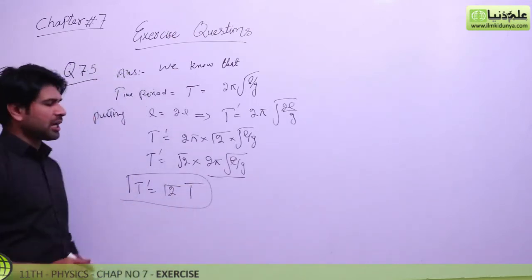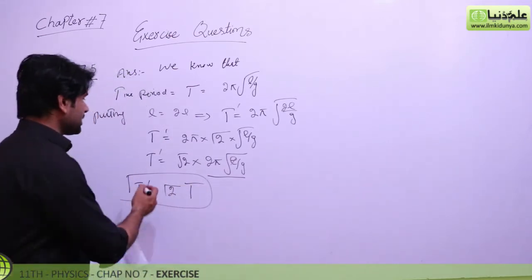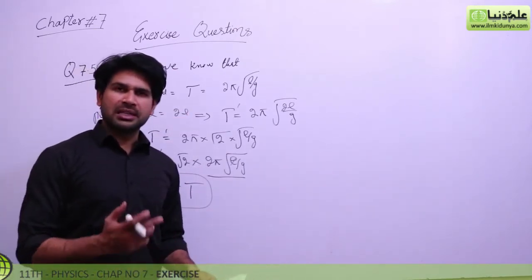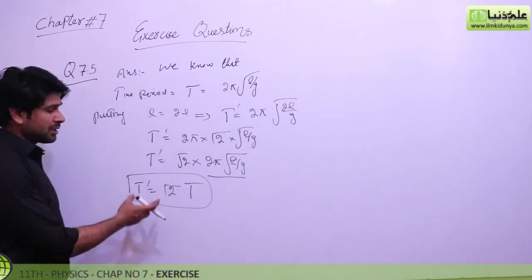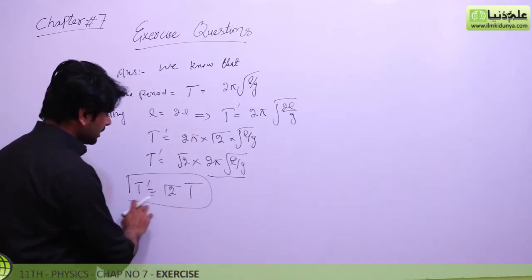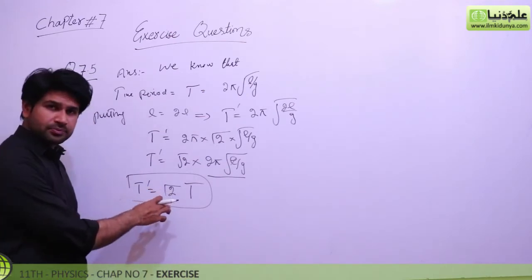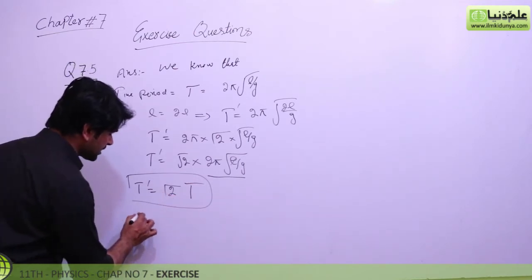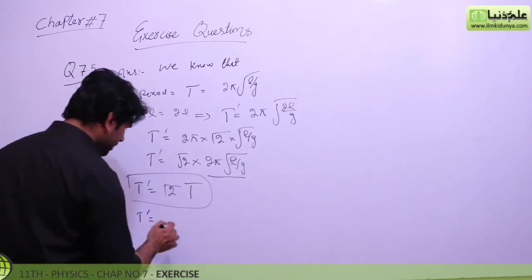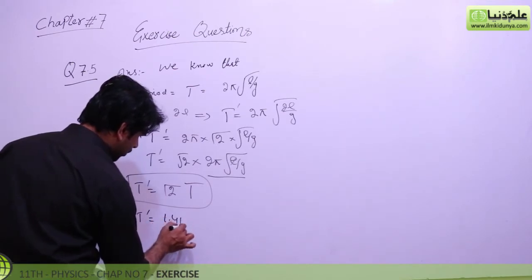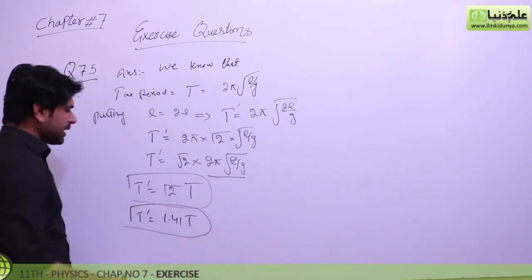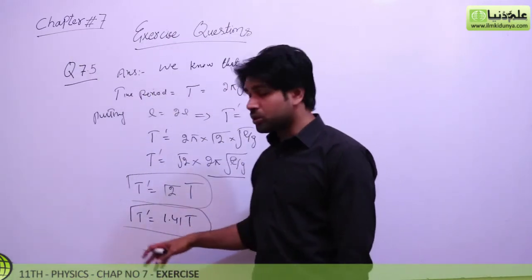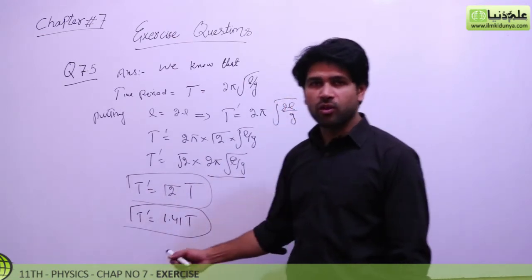So we can see that our time period after doubling the length becomes √2 times the original time period. The factor of √2 gives us approximately 1.41, meaning after doubling the length, the new time period is 1.41 times the original time period.